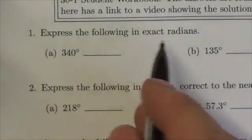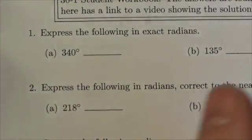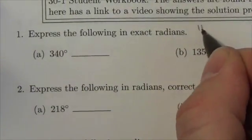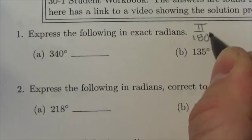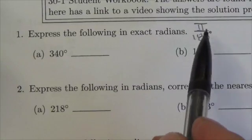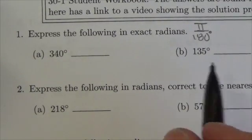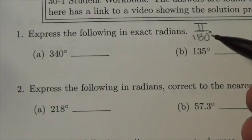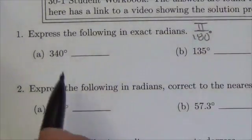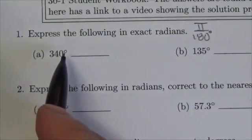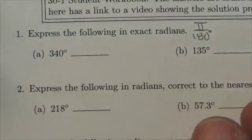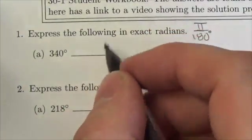This question asks us to express the following in exact radians. The conversion factor when you're converting from degrees to radians is π over 180 degrees. It's important to understand that this is a conceptual thing here. π divided by 180 is not equal to 1, but what it represents is these are the same things. π radians is the same as 180 degrees. So what we're trying to do is get rid of the degree and replace it with our radian, our non-unit measure of angle.